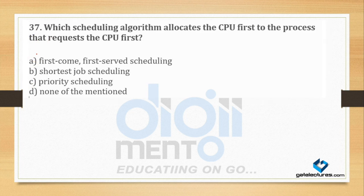Question number 37: Which scheduling algorithm allocates the CPU first to the process that requests the CPU first? It is a very simple question — which scheduling algorithm allocates CPU to the first process that has requested it. The answer is First Come First Serve (FCFS) scheduling.